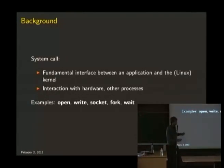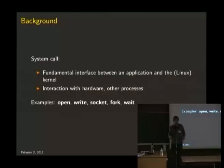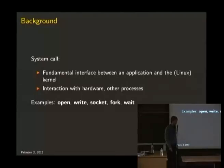I went a bit over the top using the term system call — I'll briefly explain it. A system call is just a fundamental interface between the application and the kernel, and the hardware to which the kernel interfaces. That way you can interact with the hardware using your program. Very typical examples are open, write, socket, fork, and wait.